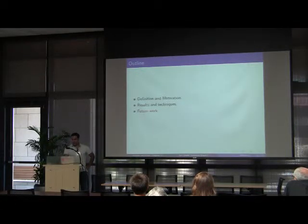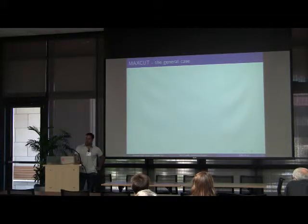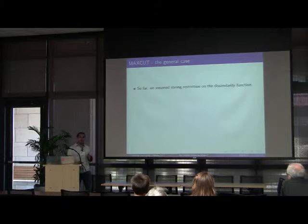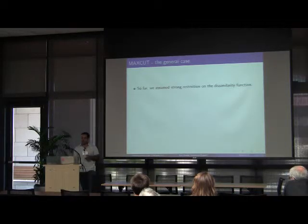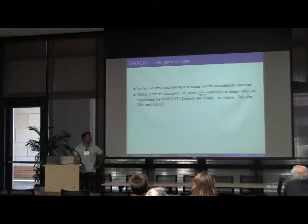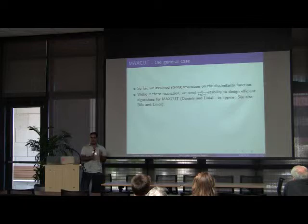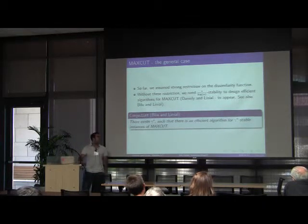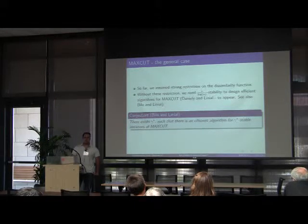We are almost finished. In the last slide I'll talk about future work we intend to do. We intend to work on max cut in general, not the metric version that I mentioned before. So far we have assumed rather strong restriction on the dissimilarity function d. Specifically we assume that d is a metric. It is enough to assume that d is a Lipschitz, but we can't throw away this assumption. And without this restriction we need n over log n stability to design efficient algorithms for max cut, which is a rather large amount of stability that is usually not reasonable to assume in practice. However, we do conjecture that there exists some constant gamma star such that there is an efficient algorithm that correctly solves all gamma star instances of max cut, which is the problem we are currently working on.